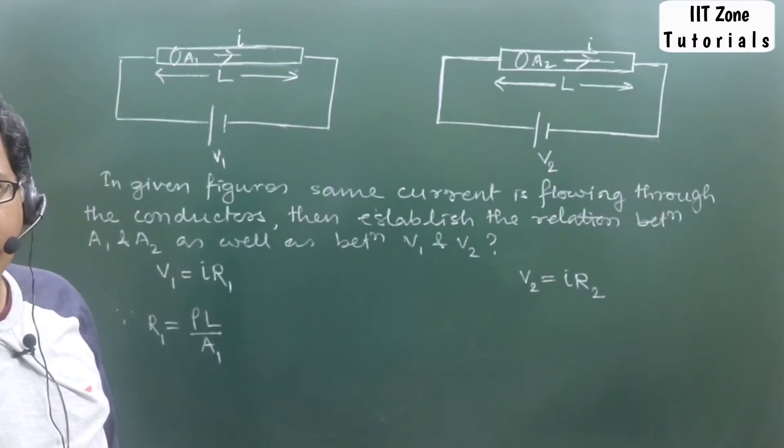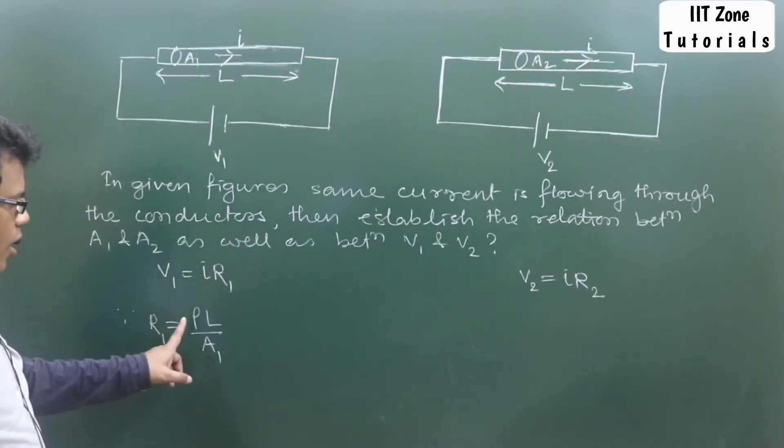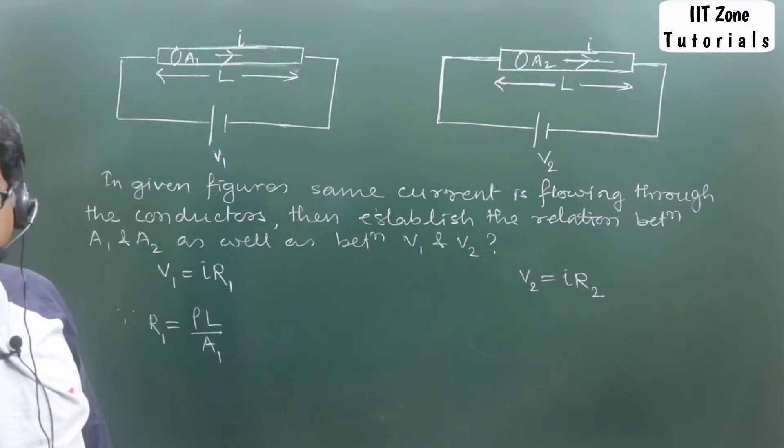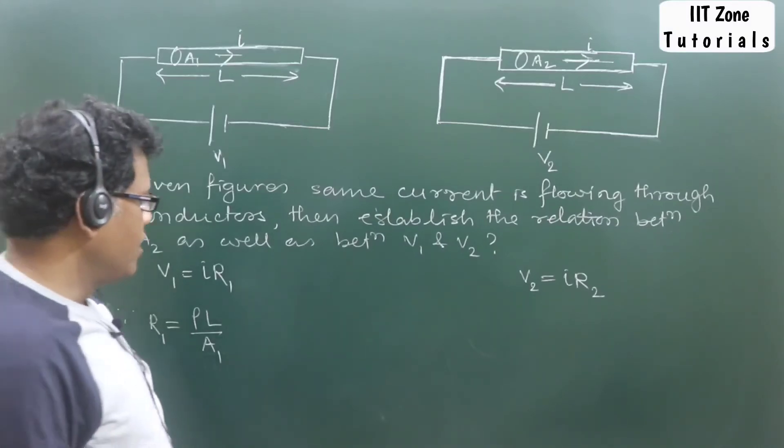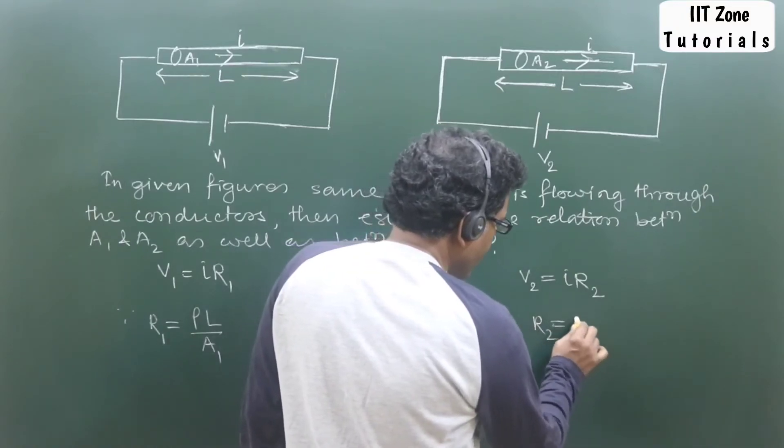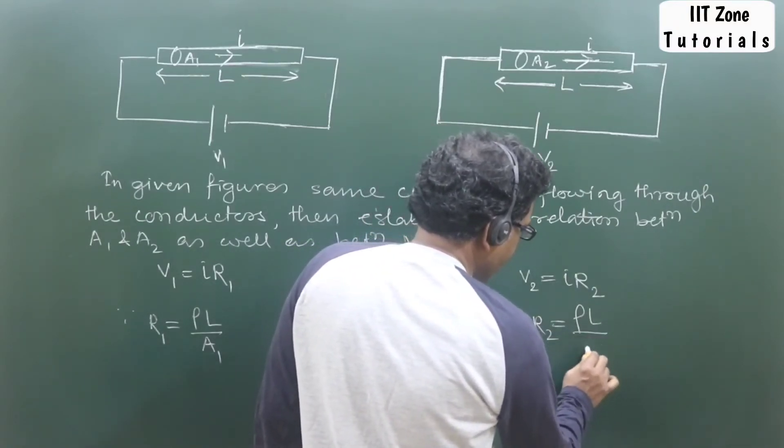That resistance of a conductor, a straight conductor, will be given by the formula ρL/A, where ρ is the resistivity—that is the material property of the conductor—L is the length of the conductor, and A stands for its area of cross-section. Similarly, the second wire will have its resistance given by this.